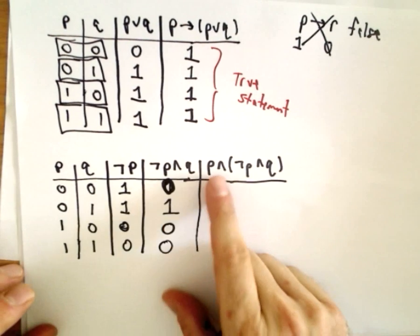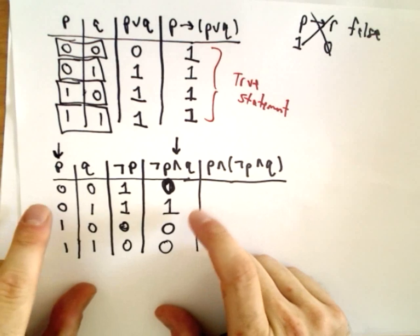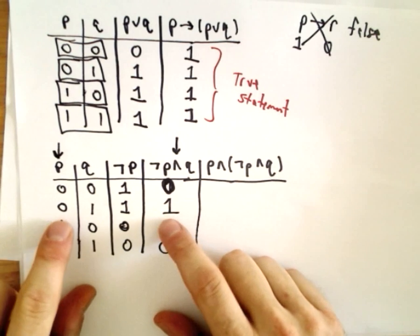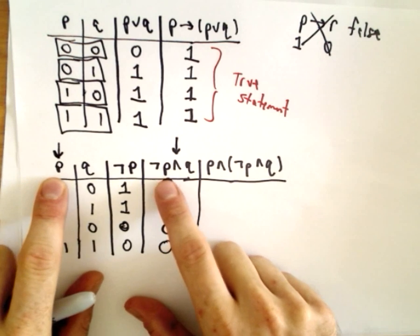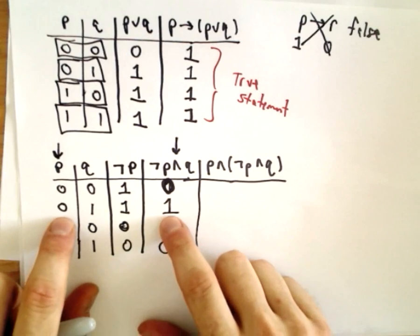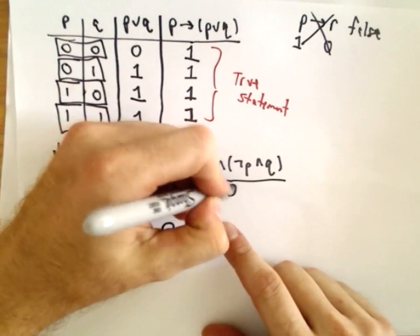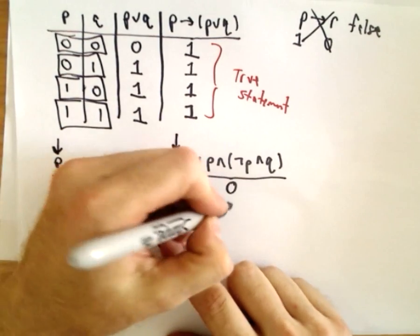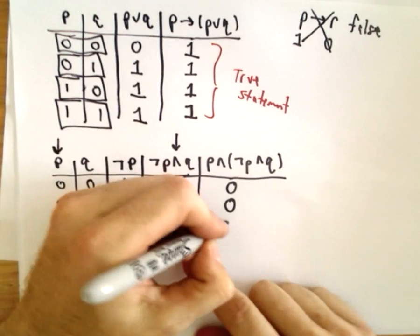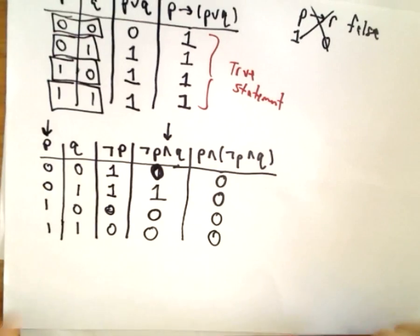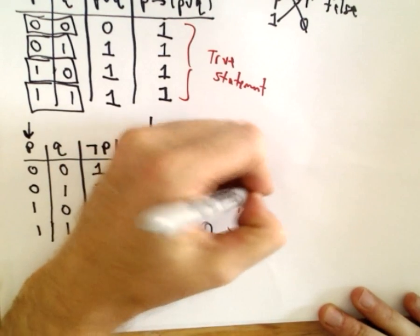Now we have to do another and statement — P and (not P and Q). There's no place where P and the compound statement not P and Q both have a true value. In the first row they're both false so that and statement is false. In the second row the first one's false. In the third row the and statement is false, and again it's false. So this compound statement is always false.